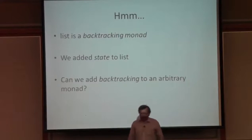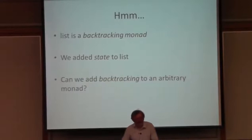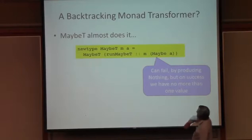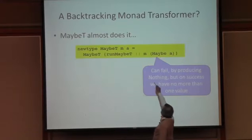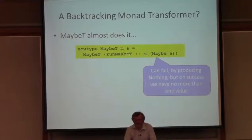I want to show you one more exercise. List is a backtracking monad. I've shown you how to add state to list, where state was a monad transformer but backtracking was done by a monad. What if I want to add backtracking to something else? Can I define a backtracking monad transformer? Turns out, yes I can. The maybe transformer almost does what I want — a MaybeT computation uses M to compute a Maybe A, which means it can fail by producing nothing, but when it succeeds, it doesn't give any possibility of generating more values.